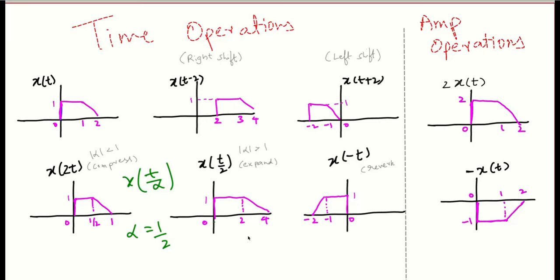Now, what is x(-t)? It's the time-reversed signal. As stated in the note, just flip the signal about the amplitude axis and you will get this signal. For the amplitude operation, if you perform 2x(t), the amplitude is being changed and all other things remain the same. And minus x(t) — we are just flipping the signal about the time axis and we end up getting this signal.